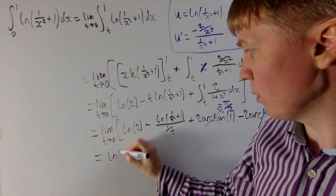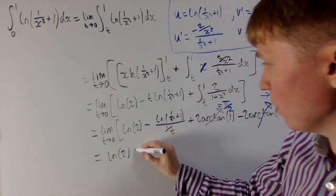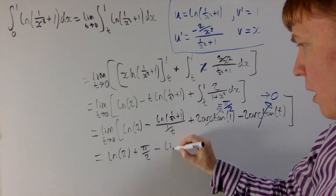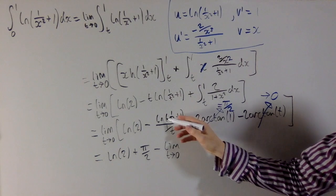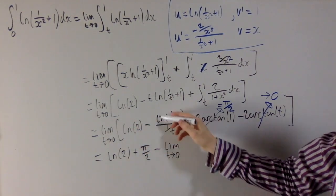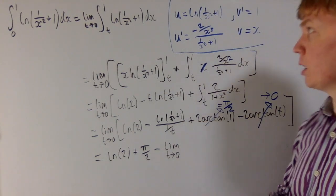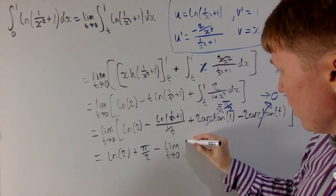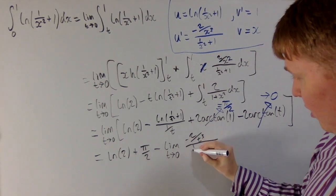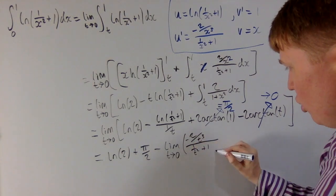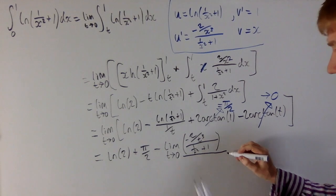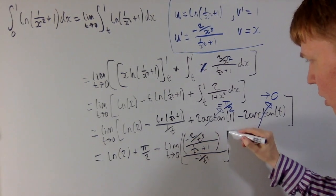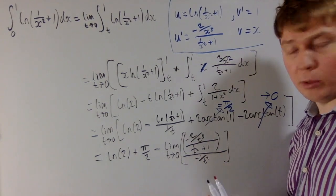So we have ln 2 plus π/2, and we still need to deal with the L'Hôpital term. Writing it as minus the limit as t goes to 0 of ln(1 over t squared plus 1) divided by 1 over t, we differentiate. We already know how to differentiate ln(1 over t squared plus 1) from our earlier work. The numerator becomes minus 2 over t cubed divided by 1 over t squared plus 1, and the denominator 1 over t differentiates to minus 1 over t squared.